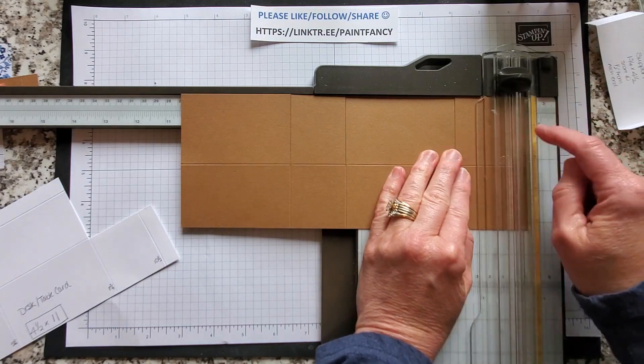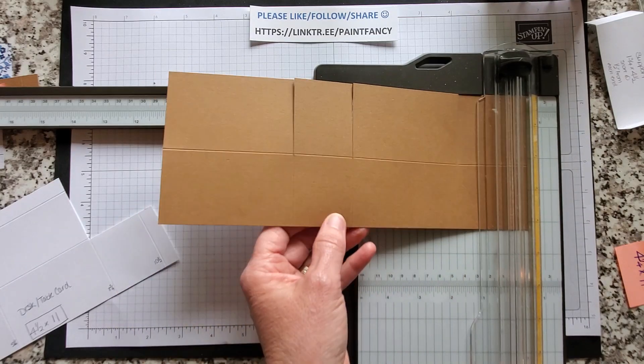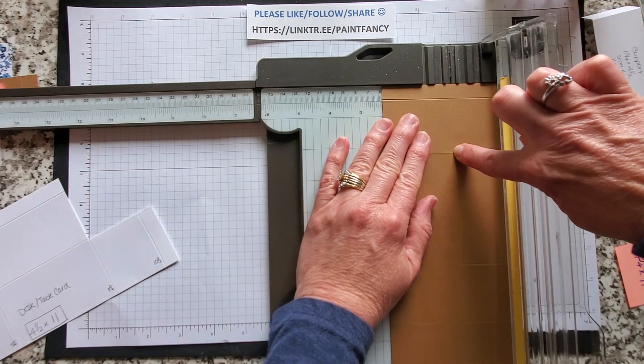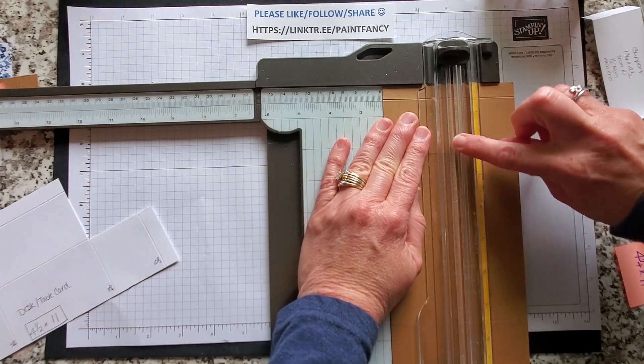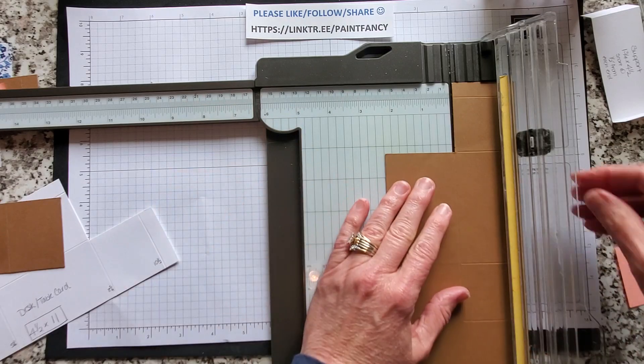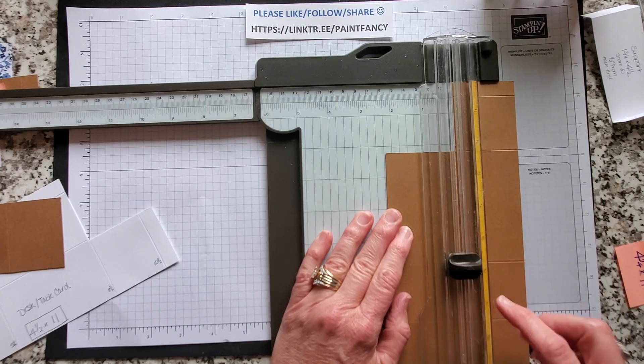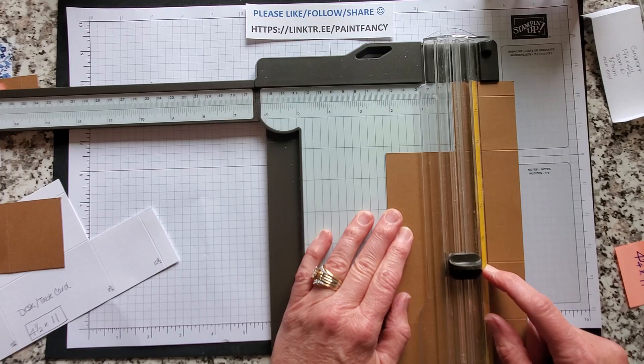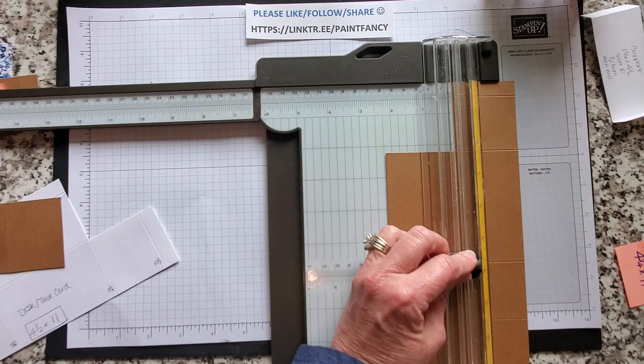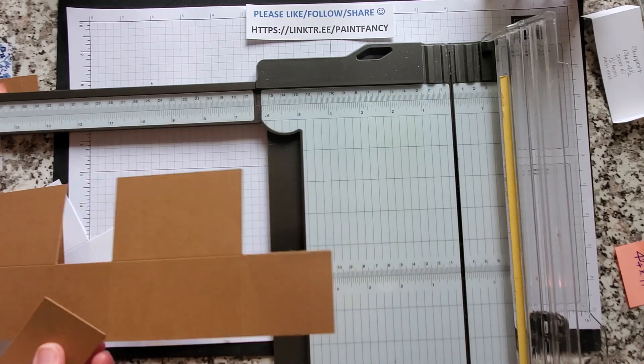And then we're going to go to ten and a half. We're just going to score this one because we're going to cut the whole piece off. Now we're going to cut from the end down to this cut, and you can see the score line in your trimmer. Take that out. And then we want to cut this piece on the score line. We're going to bring our cutter down to the five and three quarters mark and go down to seven and a half. Let's get our trimmer out of the way.